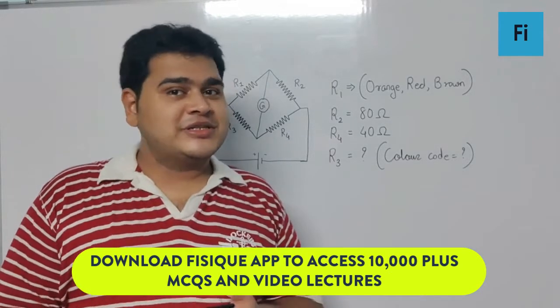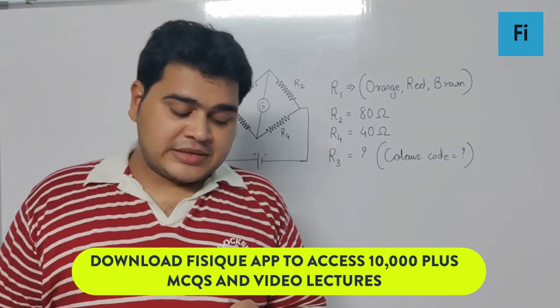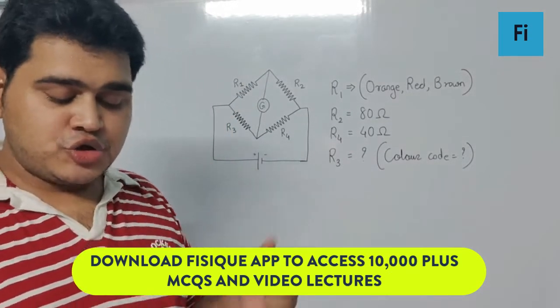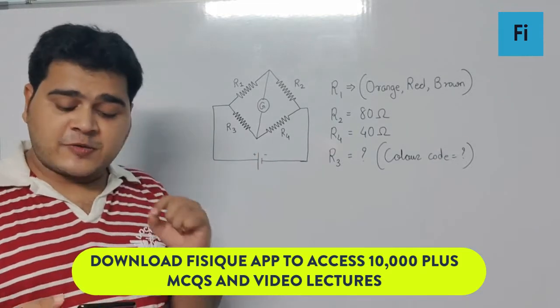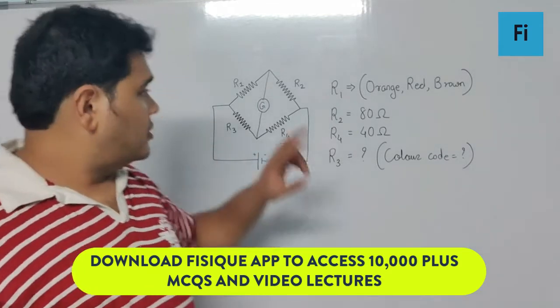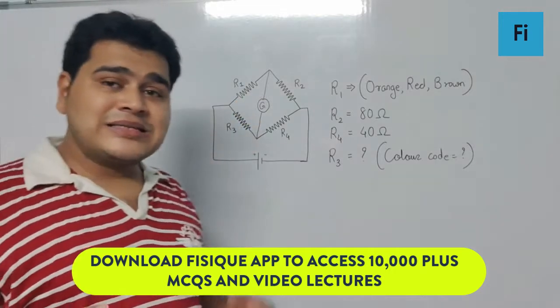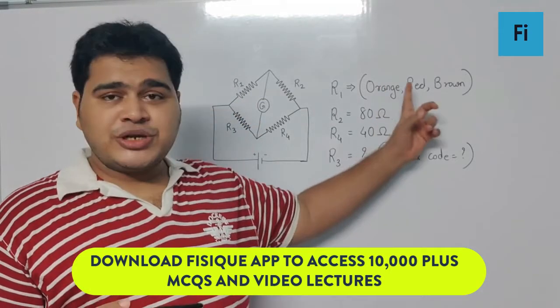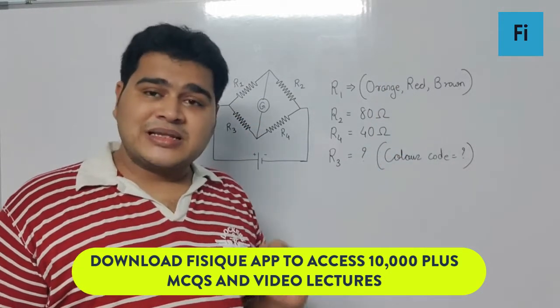The next question is really very interesting. It says the Wheatstone meter bridge shown in the figure gets balanced when a carbon resistor used as R1 has the color code orange, red, brown.